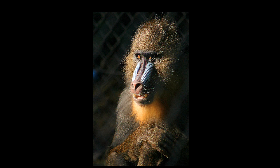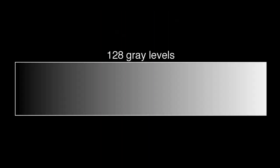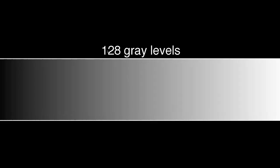Now let's take a look at intensity resolution. Here's a color bar image that transitions from a relative brightness of 0 on the left to a relative brightness of 1 on the right. I'm using a grayscale color map that has 128 levels of gray to display this image. If you look closely at any region of the image, you can see the transitions from one color level to another.